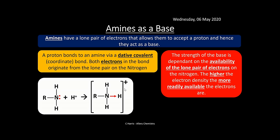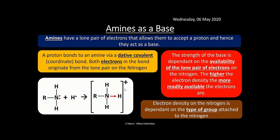The strength of the base depends on the availability of the lone pair of electrons on the nitrogen. If the electron density on the nitrogen is very high — meaning the lone pair is very available — then the amine is more basic. The availability depends on what is bonded to that nitrogen.